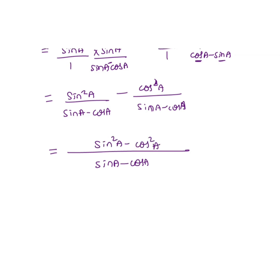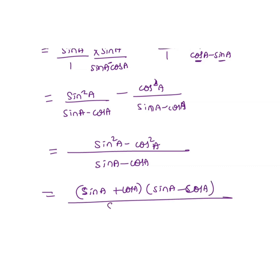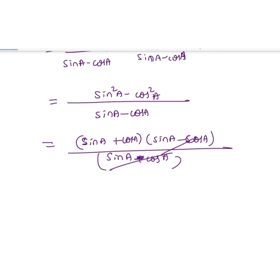The numerator becomes sin squared A minus cos squared A. Applying the formula A squared minus B squared equals (A plus B)(A minus B), this becomes (sin A plus cos A)(sin A minus cos A) divided by (sin A minus cos A). The (sin A minus cos A) terms cancel, leaving the final answer: sin A plus cos A.